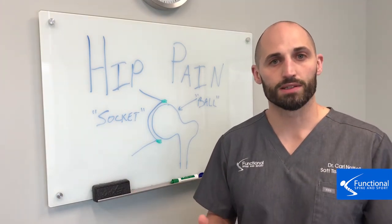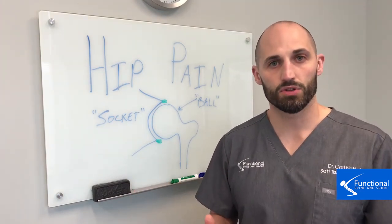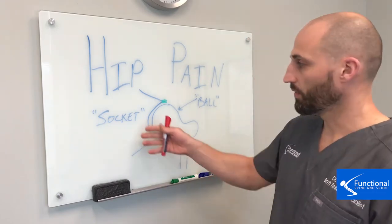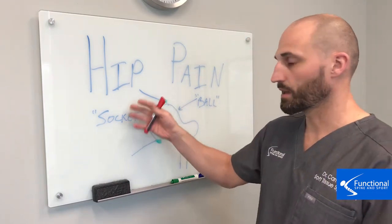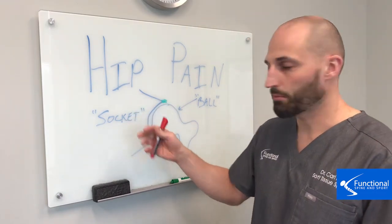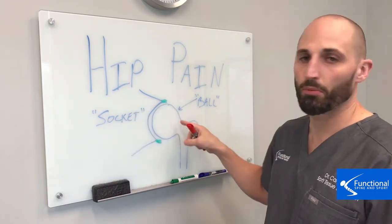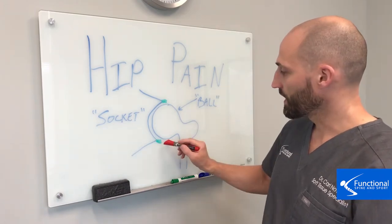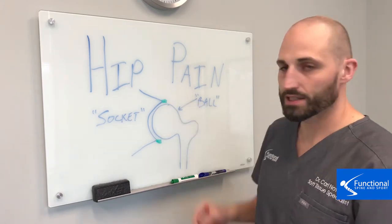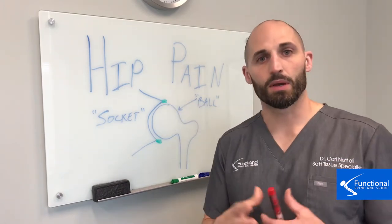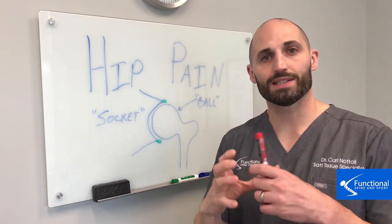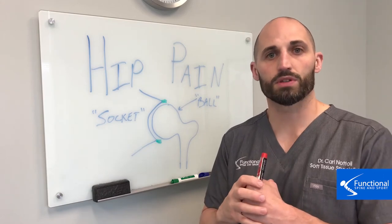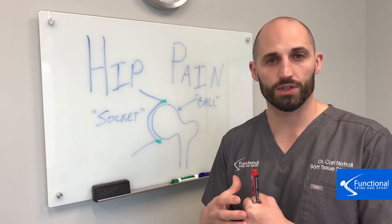So essentially it's a ball and socket joint. We've labeled here — this is the pelvis or the socket part, and this is the ball part or the femur. What you see in green is the labrum. That's basically cartilage that extends the joint and makes it a little bit more stable and a little bit more snug.